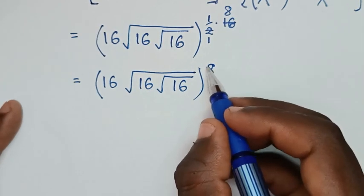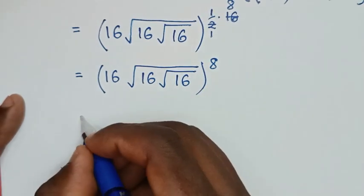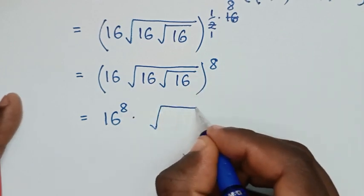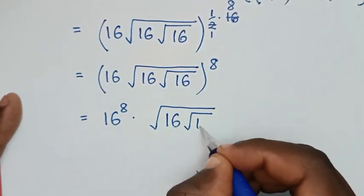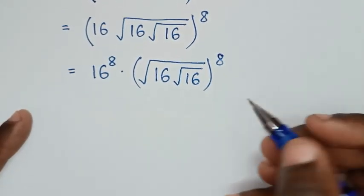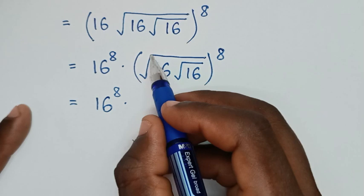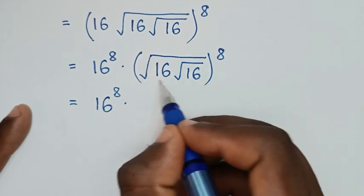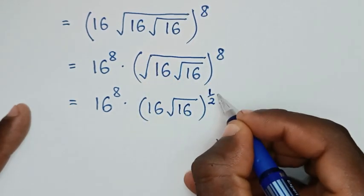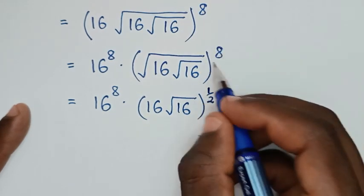In the next step, we'll take this power of 8 into here, and this power of 8 into this square root. So it will be equal to 16, square root of 16, under square root of 16, bracket, this power of 8. Then in the next step, into this square root we change into power of a half, so it will be 16, square root of 16, bracket, square root is the same as power of a half, then bracket — or we can multiply by this power of 8.